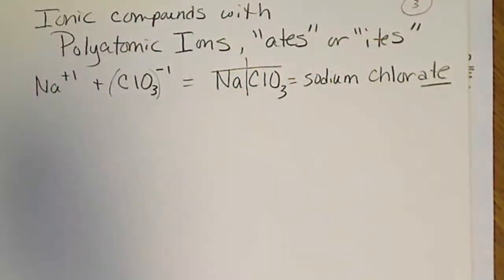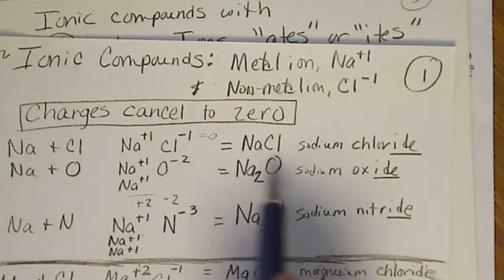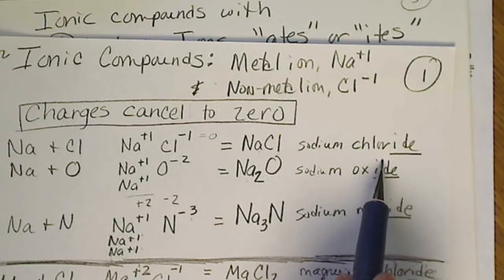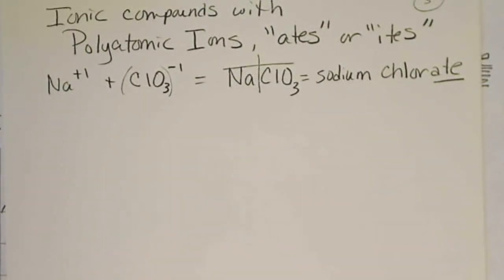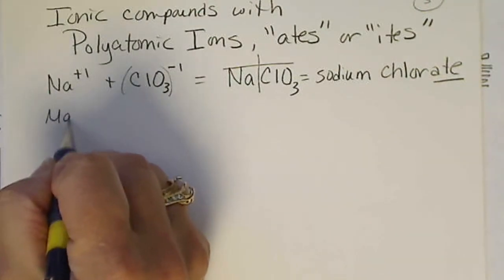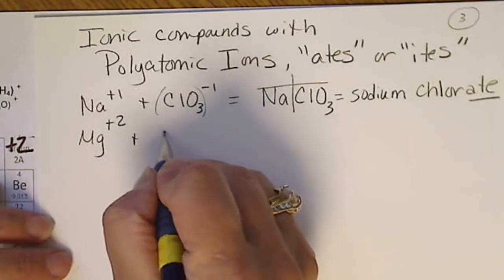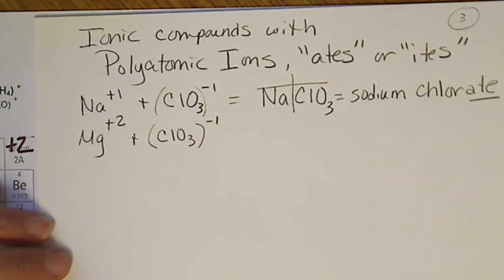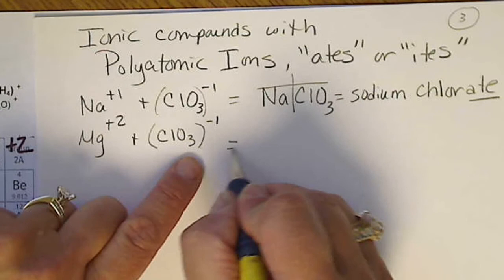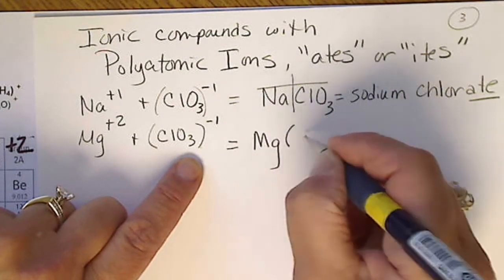The formula is just the same as a one-to-one ratio with sodium chloride. Now let's put magnesium together with chlorate. So magnesium is always a plus two. We see magnesium in the plus two column. And chlorate, that whole compound, is always a minus one.